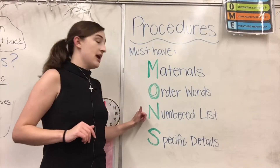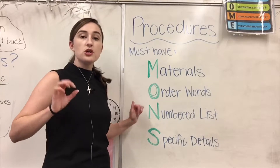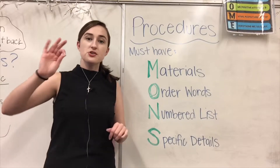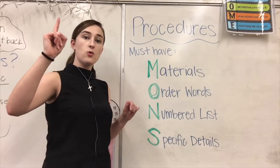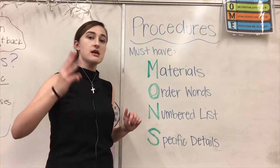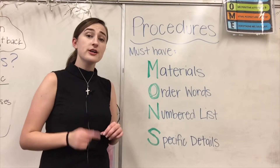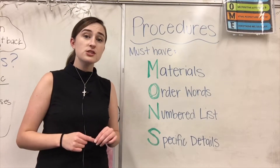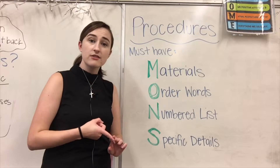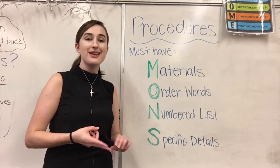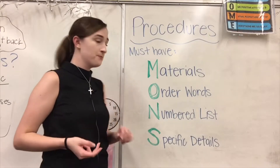A numbered list is pretty simple. Your procedure needs to be in a numbered list: one, two, three, four. If you want good examples of these, you can look at the beginning of class procedures and the end of class procedures.